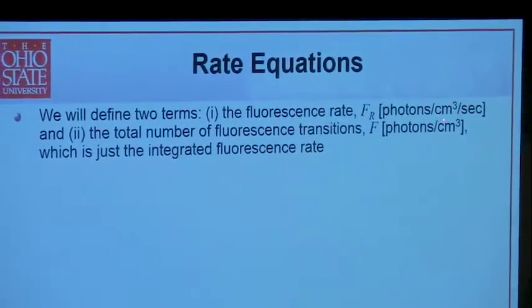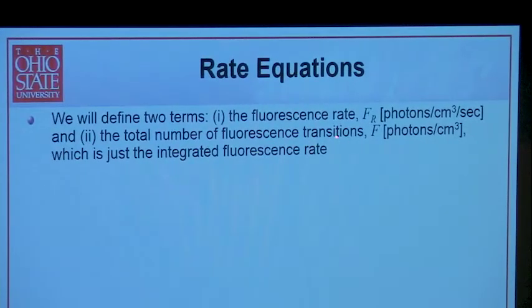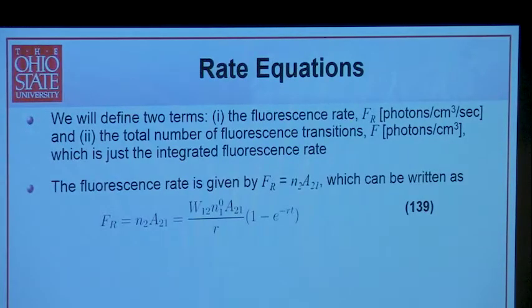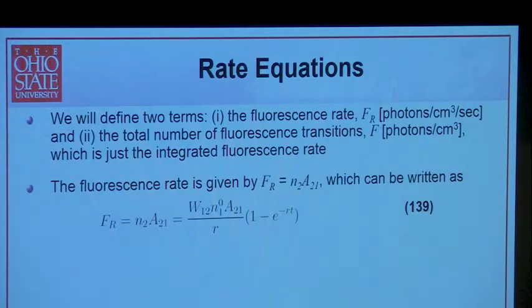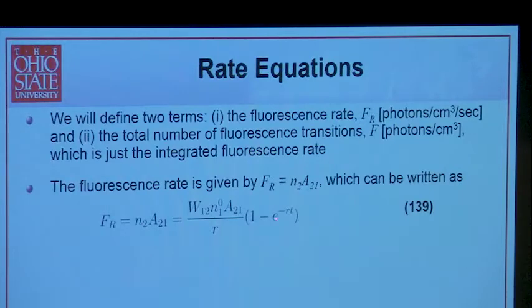We need to define a couple of terms. We have the fluorescence rate, which is photons per volume per second, and then we have the number of fluorescence transitions — photons per volume — which is just the integral of the fluorescence rate. The fluorescence rate is just whatever we have in the upper state population times the emission term. This should make sense: the rate at which we get photons given off, we're pulling from the pool in state two, and then we have the spontaneous emission rate — a rate times a population.